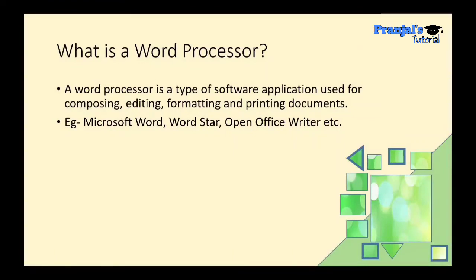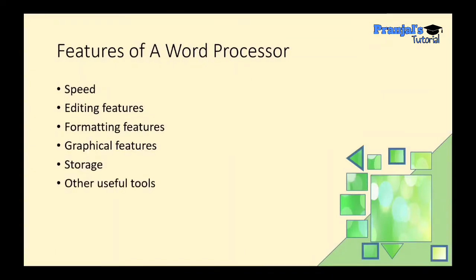Examples of Word Processor software: first is Microsoft Word, next is WordStar, and third is OpenOffice Writer. So these are the names of Word Processors. For example, the question may be: write the names of any two Word Processors.